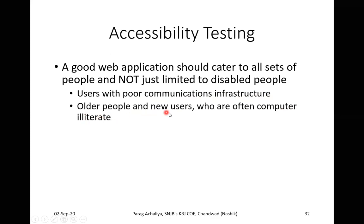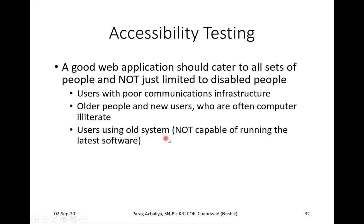We should also focus on older people and new users who are often computer illiterate — older people whose age is advanced, and new users who do not yet have proper knowledge of how to handle a system, computer, or application. We should also focus on users using old systems that are not capable of running the latest software. For example, today's standard is i3, i5 processors, but many people are still using P1, P2, P3, or P4 processors.